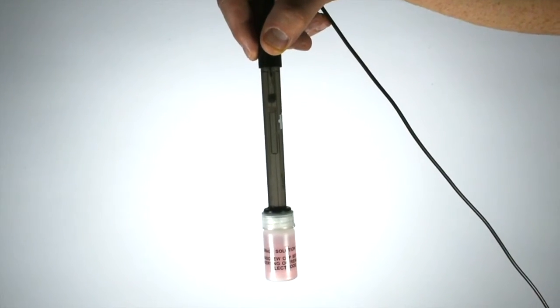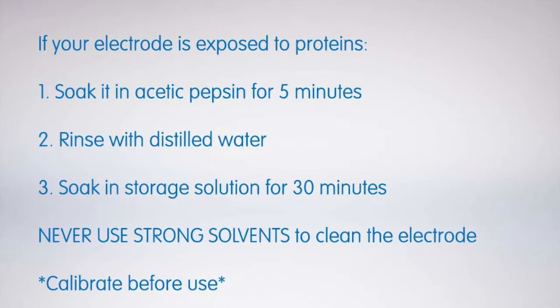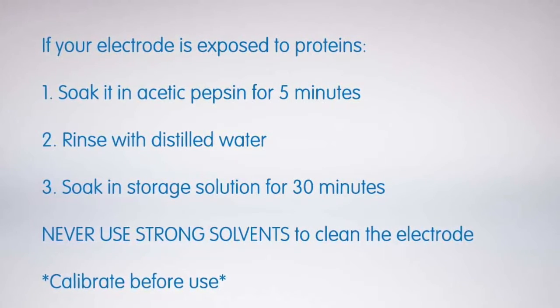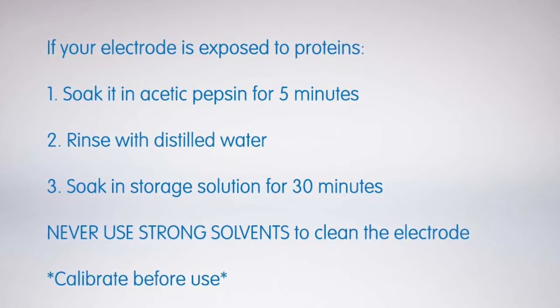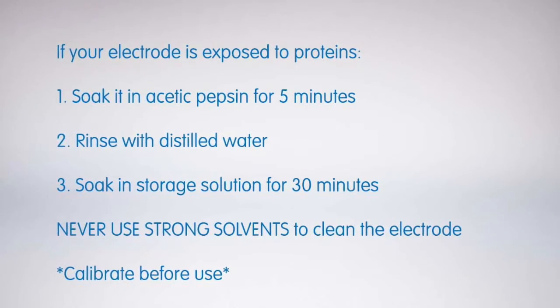After cleaning, let the electrode soak in its storage solution for at least half an hour. If your electrode is exposed to proteins, soak it in acidic pepsin for 5 minutes. Rinse with distilled water. Then soak in storage solution for at least half an hour.